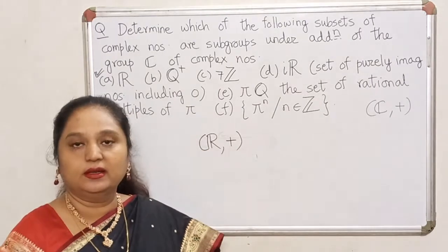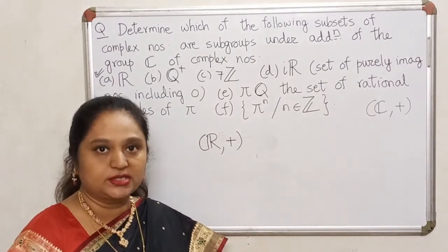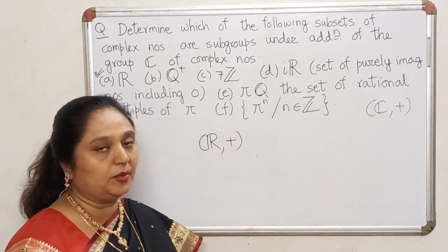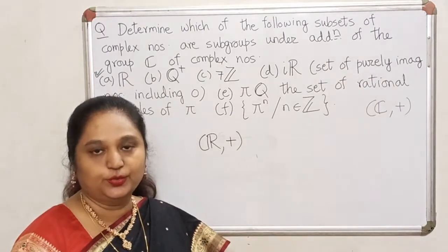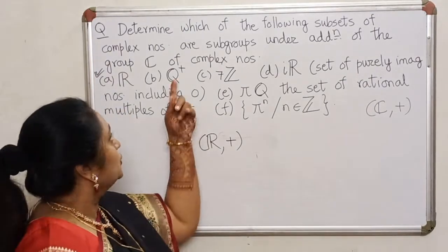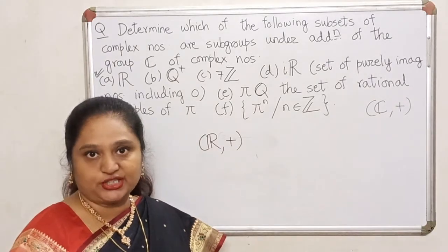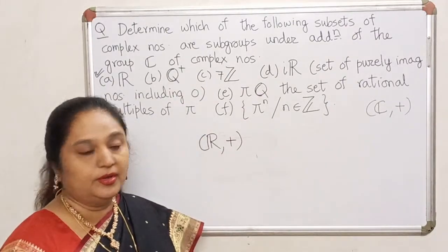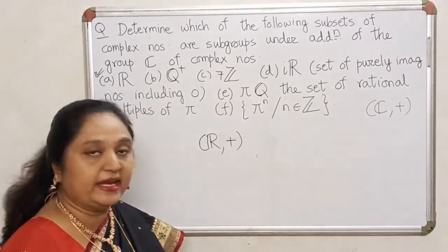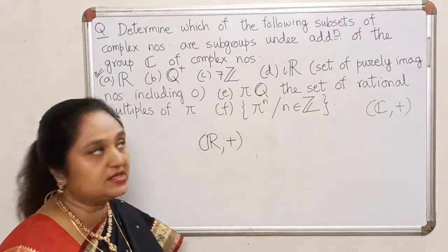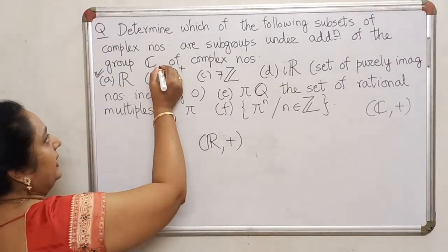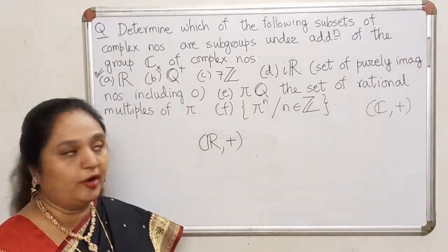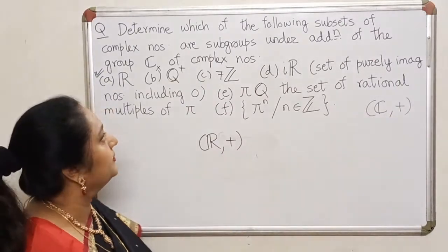What about the next one? Q+ is the set of positive rational numbers. Pause your video and think before I give away the answer. If you look at the set of positive rational numbers, then with respect to addition, this is not a group. Because 0, which is the identity for addition, is not going to belong to this set. So because the identity for addition is not in this set, this set is not a subgroup of C with respect to addition.